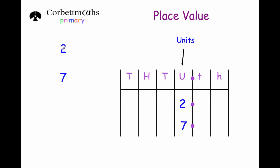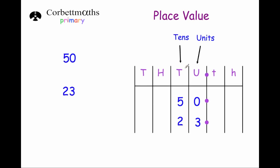Here we've got two numbers, the number 2 and the number 7. Both of these numbers have just got units. 2 is 2 units and 7 is 7 units. Let's have a look at 10s. We've got units and then the next column is 10s. The number 50 has got 5 tens, so we write 5 in the 10s column and 0 in the units column, so it's 50.